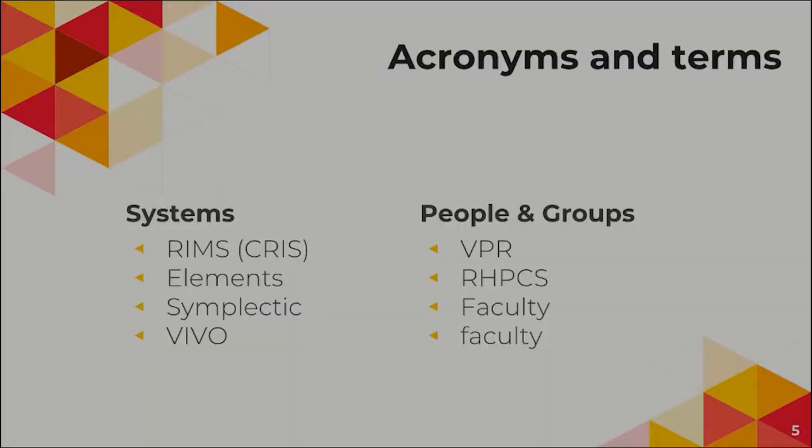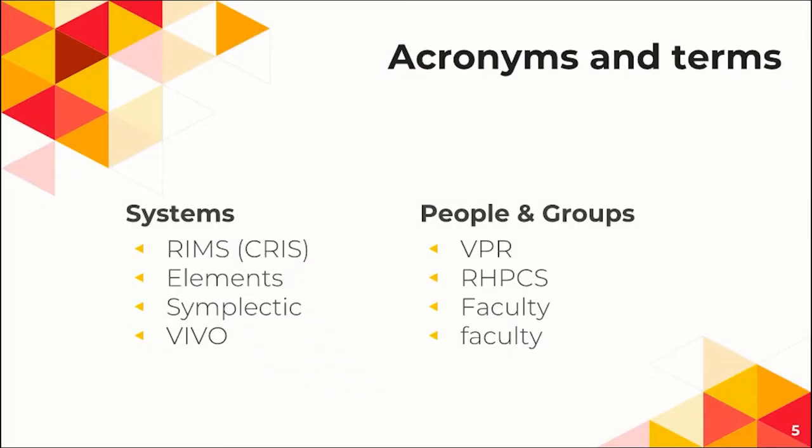We thought it relevant to define the acronyms and the Canadianisms up front so that when we mention them later, you don't have to stop and think about what they mean. First, systems: a RIMS — also referred to as a CRIS or a RIS — is a research information management system, a system capable of integrating information about research, researchers, and their scholarly activities.